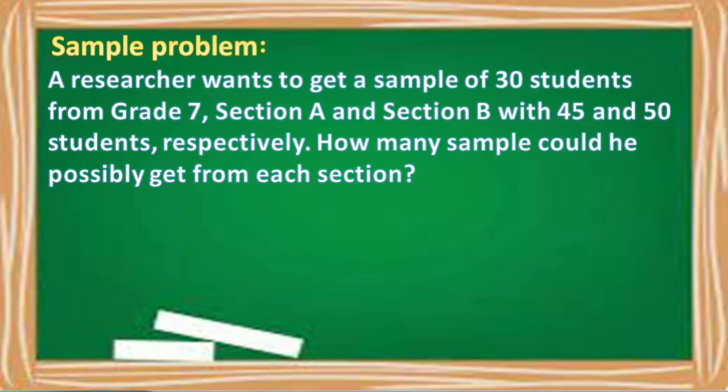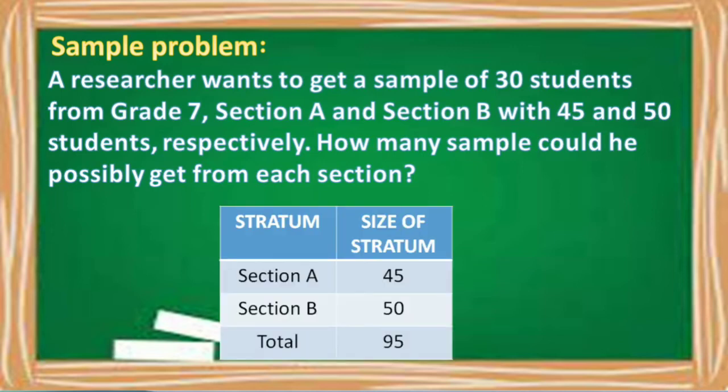Let us identify first the stratum and the size of the stratum. So, the first stratum is section A with a size of 45 and section B with a size of 50 for a total population of 95.